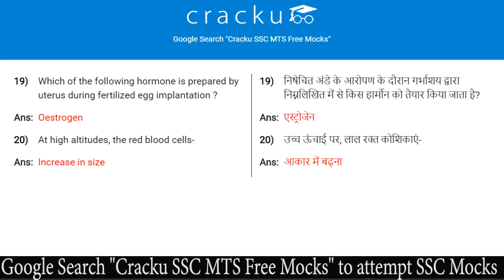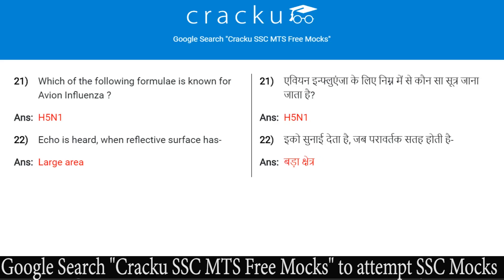At high altitudes, the red blood cells increase in size. Which formula is known for avian influenza? The answer is H5N1.